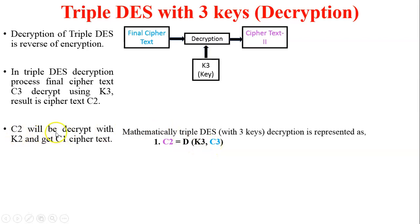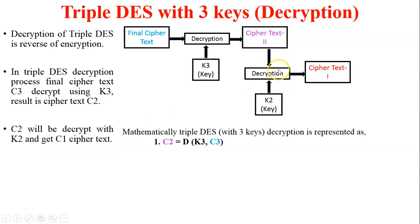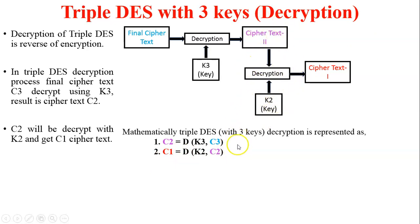Next, C2 is decrypted with K2 to get C1. In the figure, the second decryption process takes inputs K2 and C2, generating C1. Mathematically: C1 = D(K2, C2). Substituting C2 from the first equation: C1 = D(K2, D(K3, C3)).